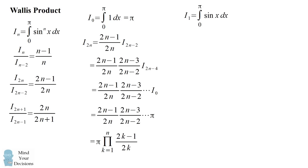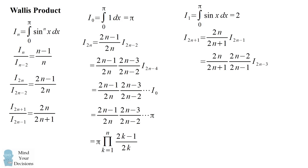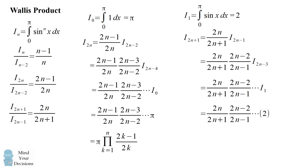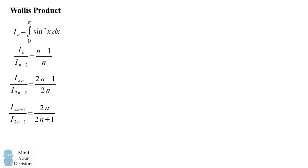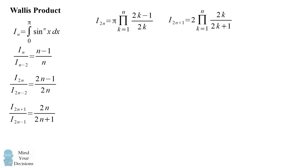We do a similar thing for odd numbers. We start with i sub 1 equaling the integral from 0 to pi of sine to the power of 1 of x dx, which equals 2. For a general odd number, we apply the reduction formula on i sub 2n plus 1, working down through i sub 2n minus 1 all the way to i sub 1, which equals 2. So we have i sub 2n plus 1 equals 2 times the product of 2k over 2k plus 1, where k runs from 1 to n.